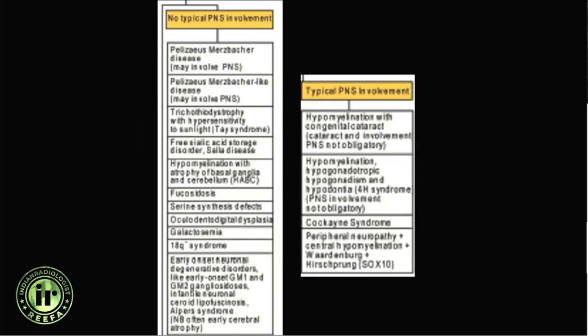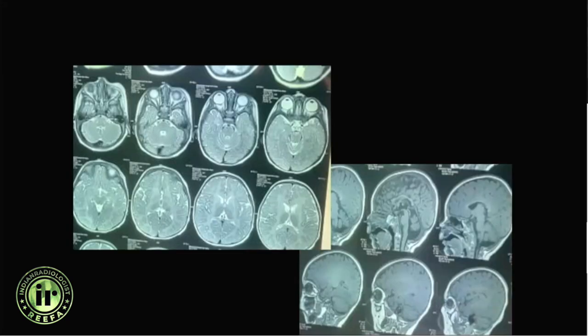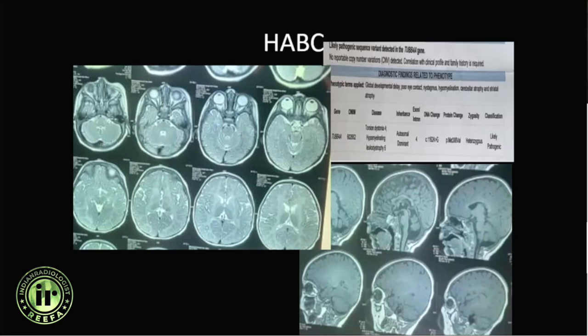Some hypomyelinating disorders can also have peripheral nervous system (PNS) involvement. Another patient with diffuse white matter hyperintensity and hypomyelination also had hypoplastic basal ganglia and cerebellar hemispheres. Genetic testing revealed a TUBB4A mutation, and this was diagnosed as hypomyelination with atrophy of the basal ganglia and cerebellum.